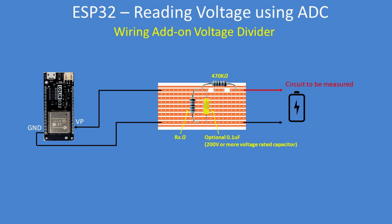Here's a reminder of the wiring for the voltage divider. The 0.1 microfarad capacitor helps smooth out noise in the readings. It can be any voltage rating, but it needs to be rated higher than the voltage you're measuring — so for a 100 volt circuit, use a capacitor rated greater than 100 volts.